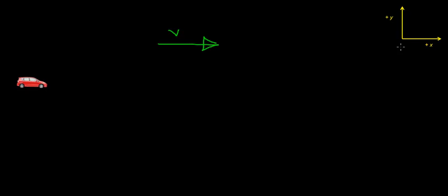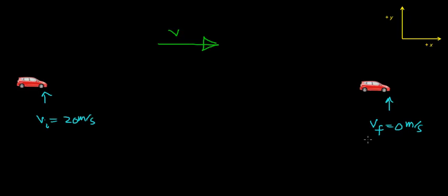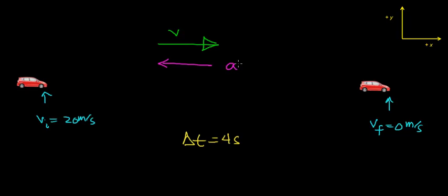So the velocity is pointing in the positive x direction. If this car starts out with an initial velocity of 20 meters per second, then applies the brakes and comes to a final velocity of 0 meters per second — so it's going to come to a rest — and it takes a total time of 4 seconds for this car to come to a stop. What is the acceleration, and in what direction should the acceleration vector point? Intuitively, the acceleration vector should point in the opposite direction that the velocity vector is pointing. Let's go ahead and prove that through this example.